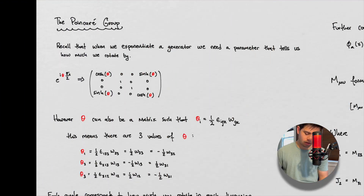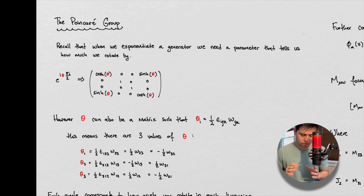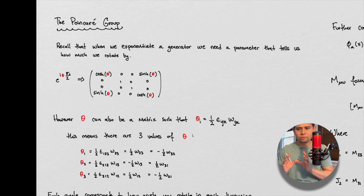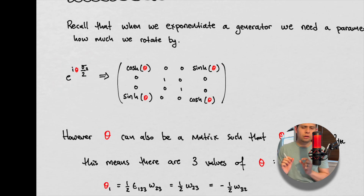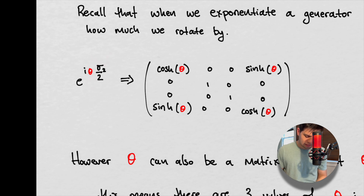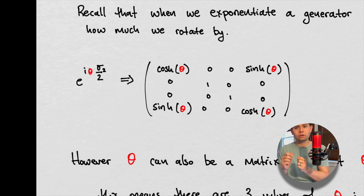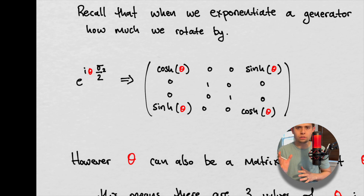So we're talking about the Poincaré group. Before we talk about this, let's step back a few steps and really think about something. When we rotate, mathematically, what we've done in quite a few videos is we've said if we exponentiate something — say something that looks like this, we can exponentiate a matrix — but in that exponentiation we need this parameter theta. This parameter theta is what we use to define how much of a rotation we are undergoing.